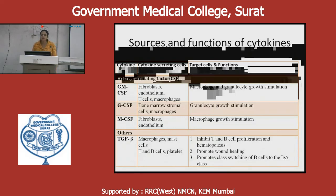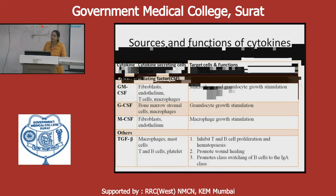This concludes the topic on the structure and functions of the immune system, covering all about the organs of the immune system — primary and secondary lymphoid organs — then the cells of the immune system, cytokines, and MHC molecules. Thank you.